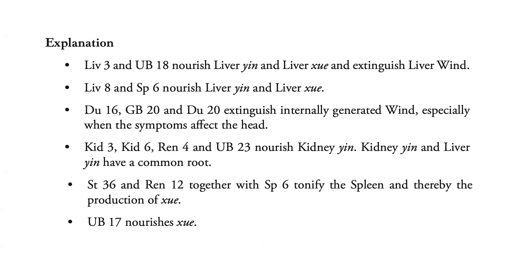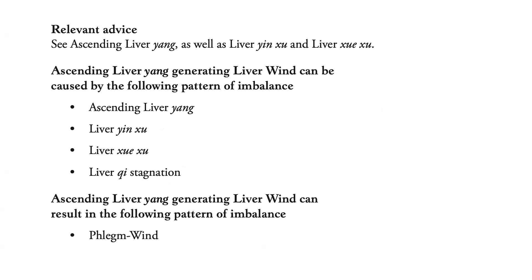Liver 3 and Bladder 18 nourish the liver yin and liver blood and extinguish liver wind. Liver 8 and Spleen 6 nourish liver yin and liver blood. DU 16, GB 20 and DU 20 extinguish internally generated wind, especially when the symptoms affect the head. Kidney 3, 6, REN 4 and Bladder 23 nourish kidney yin. Kidney yin and liver yin have a common root. Stomach 36 and REN 12 together with Spleen 6 tonify the spleen and thereby the production of blood. Bladder 17 nourishes blood.